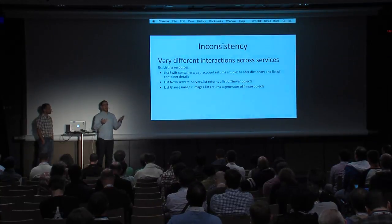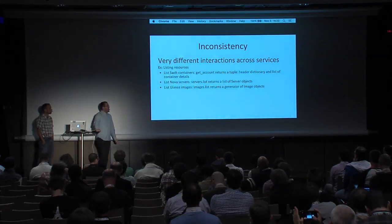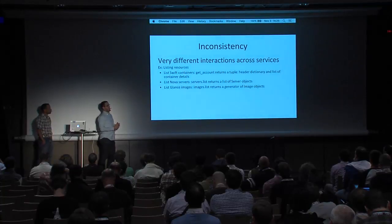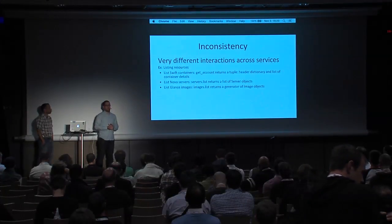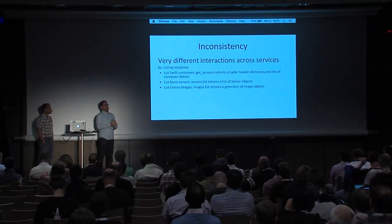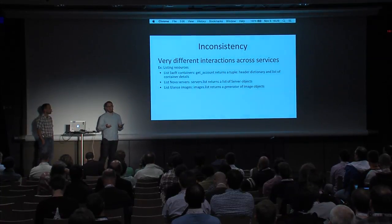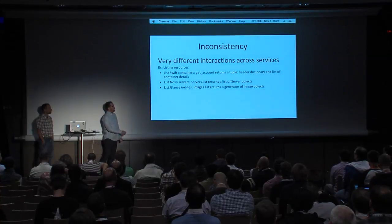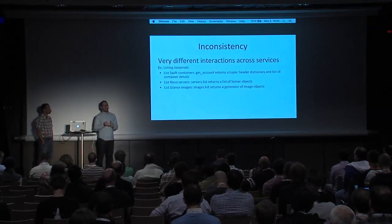If we look at listing resources — one of the simple first things you might do — in Swift you have containers, in Nova you have servers, in Glance you have images. To list containers in Swift, you call get_account because you do a GET request on the /account endpoint in the REST API, and that gives you a tuple. In Nova, servers.list gives you a list of servers. In Glance, images.list returns a generator. Three fairly simple operations done in three entirely different ways, named two different ways.